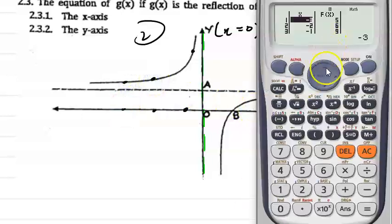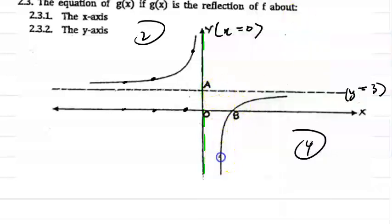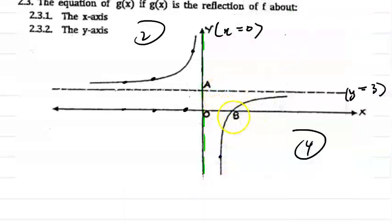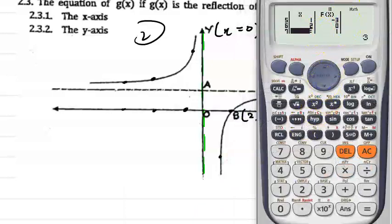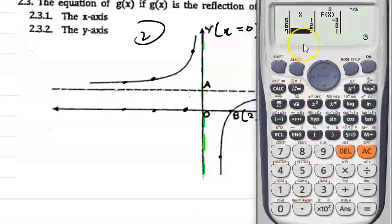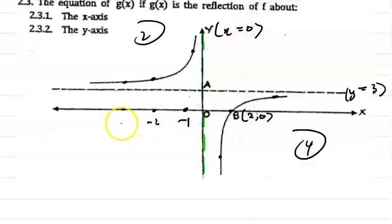If you look here, a value of 0 gives an error, which means at x equals 0 you get an asymptote. At x equals 1, y equals minus 3 — that point is somewhere there. At x equals 2, y equals 0 — that's your x-intercept, at (2, 0). And then x equals 3 gives y equals 1, which is somewhere there. So that's how you plot your points once you've drawn in your asymptotes.